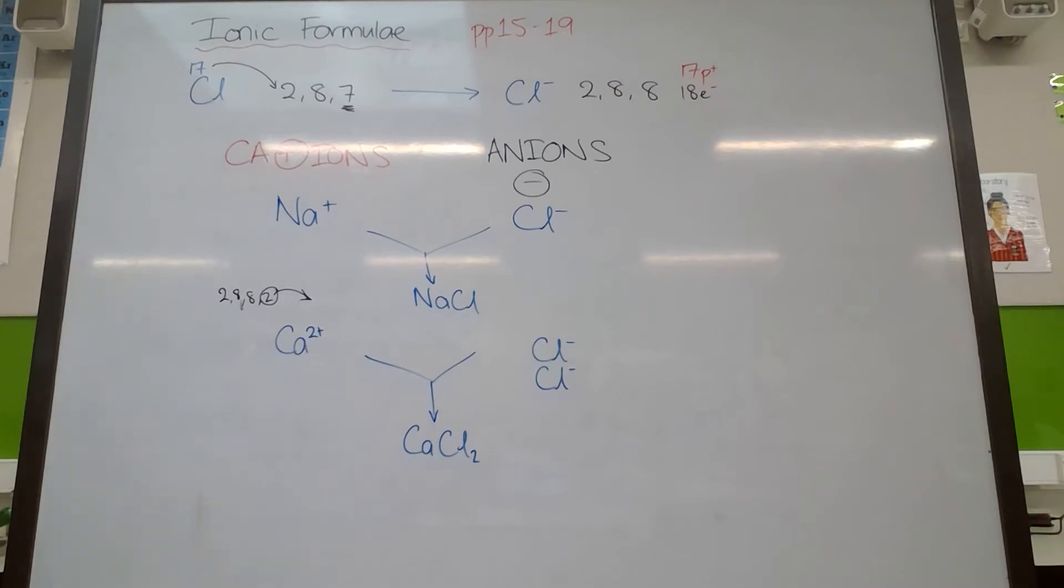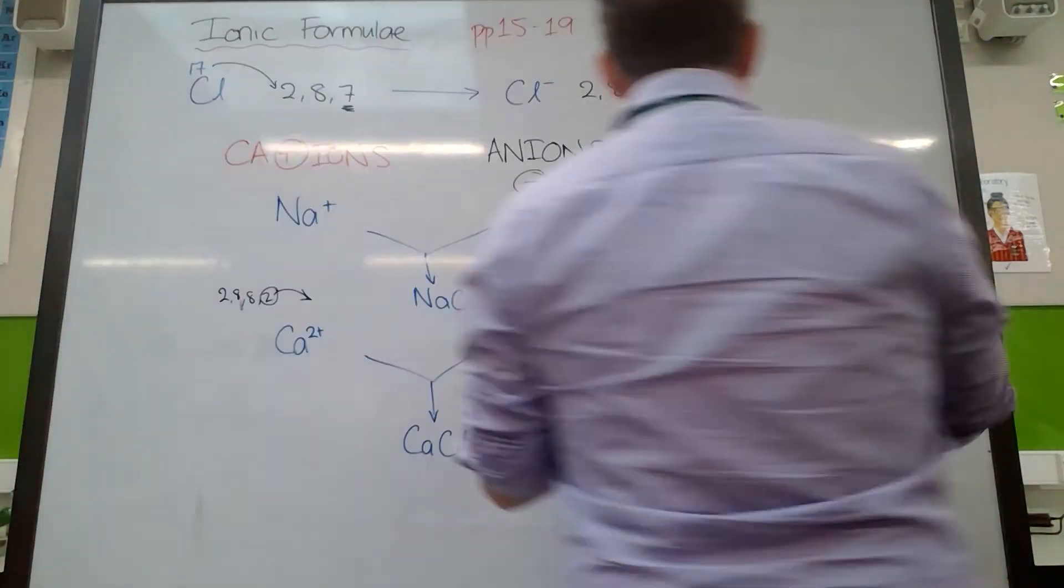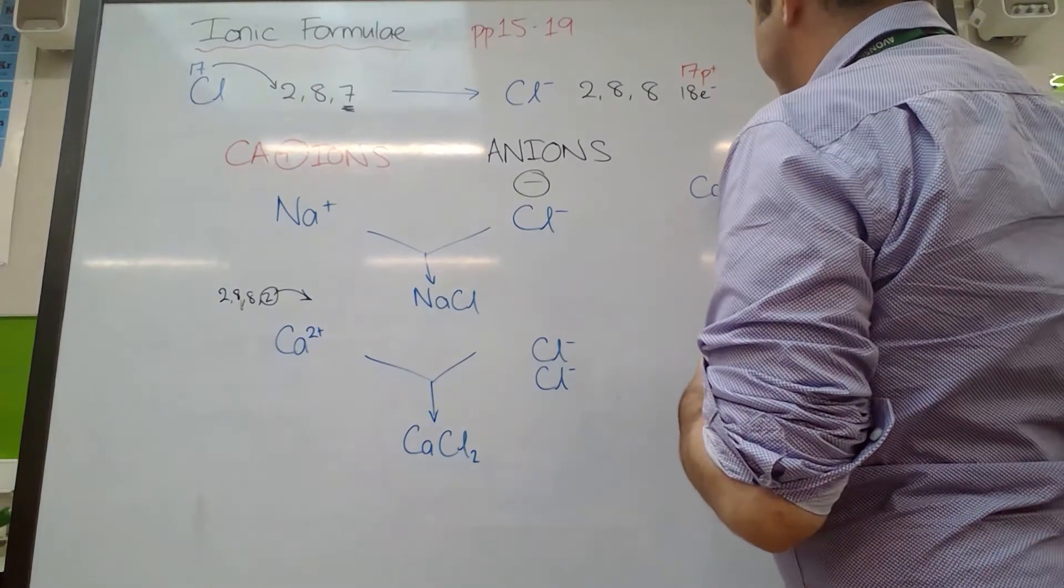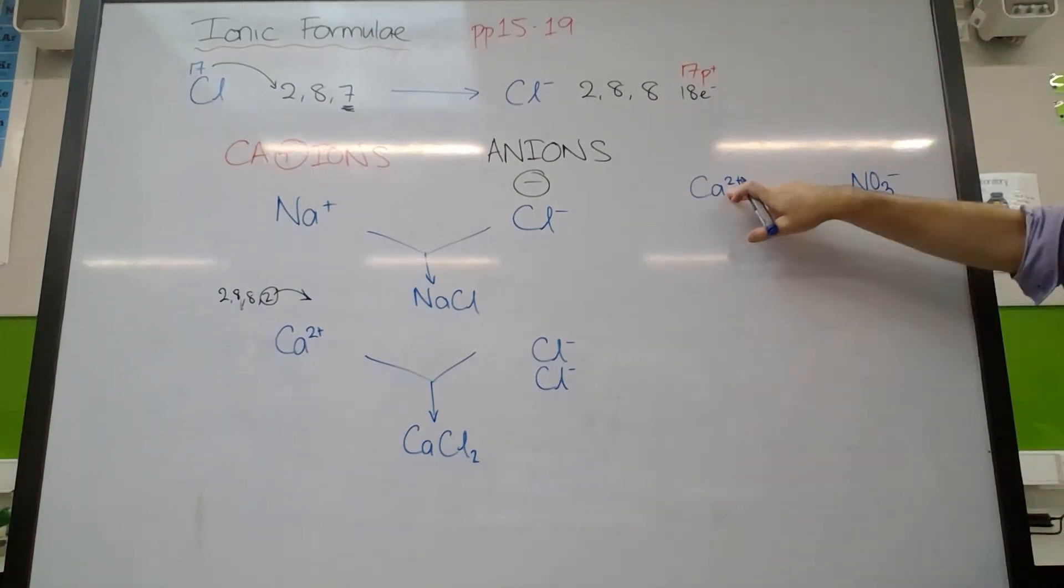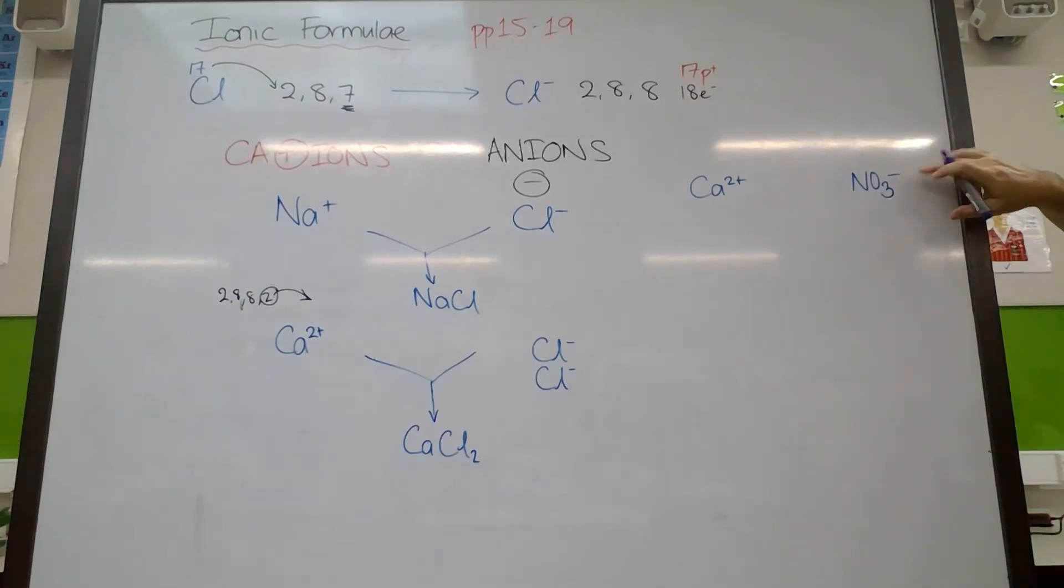Then it gets a bit more complicated. Some ions are made up of more than one atom. For example, the nitrate ion, and so I'm going to go over to the right here because I'm running out of depth on my board. Let's say we had calcium, and we had nitrate. This is two plus, this is only one minus, so I need two of these to balance it out.